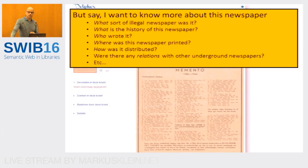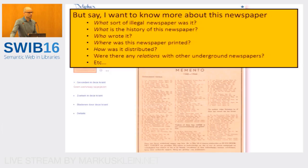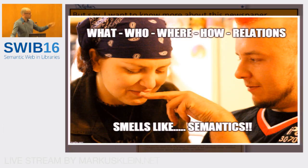But if you want to ask contextual questions about these newspapers — like what sort of newspaper was this, was it radical or moderate, what was the history, who wrote it, where was it printed, how was it financed or distributed, and were there any relations with other illegal newspapers — when you look at those questions: the what, the who, the where, the how, and the relations, no surprise, those are already semantic questions.